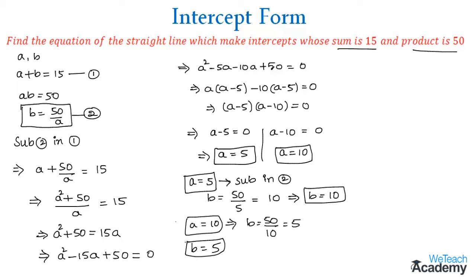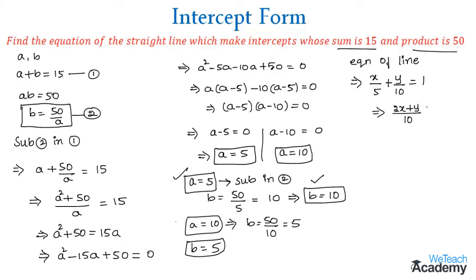Now let us find the equations using both values. Using a = 5 and b = 10, the intercept form gives x/5 + y/10 = 1. Taking LCM as 10, the numerator gives 2x + y = 10, so the equation is 2x + y - 10 = 0.